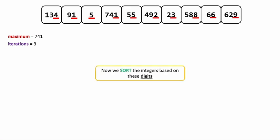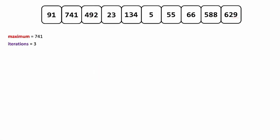Now we go ahead and sort the integers based on these ones place digits. As you can see, we have 91, 741, then 492, and 23, and so forth. That was just the first iteration — we have two more.